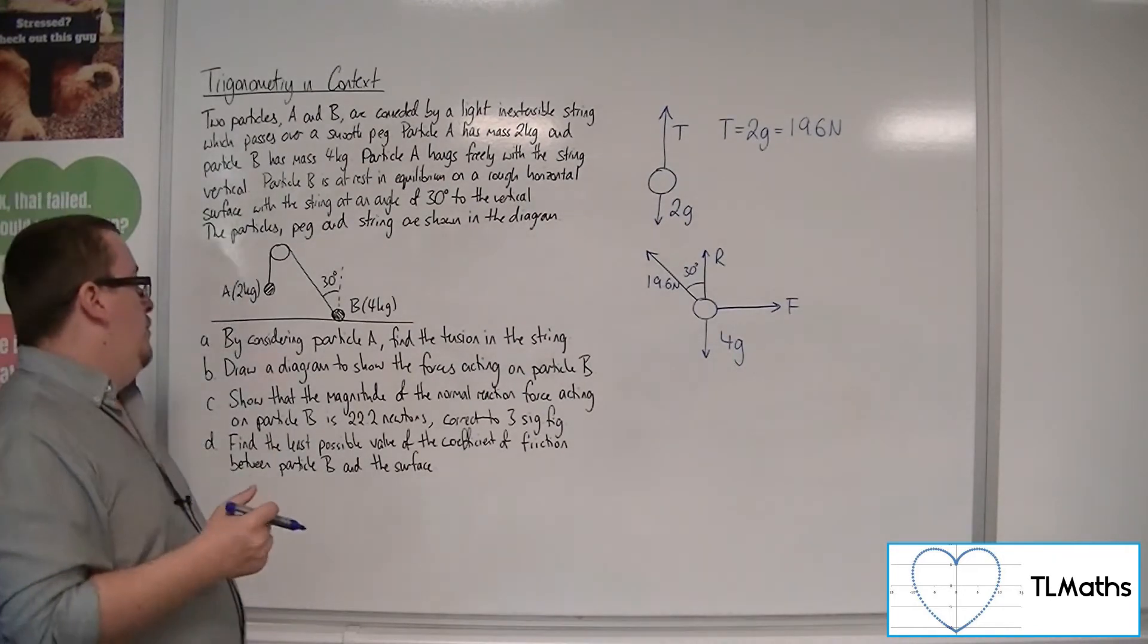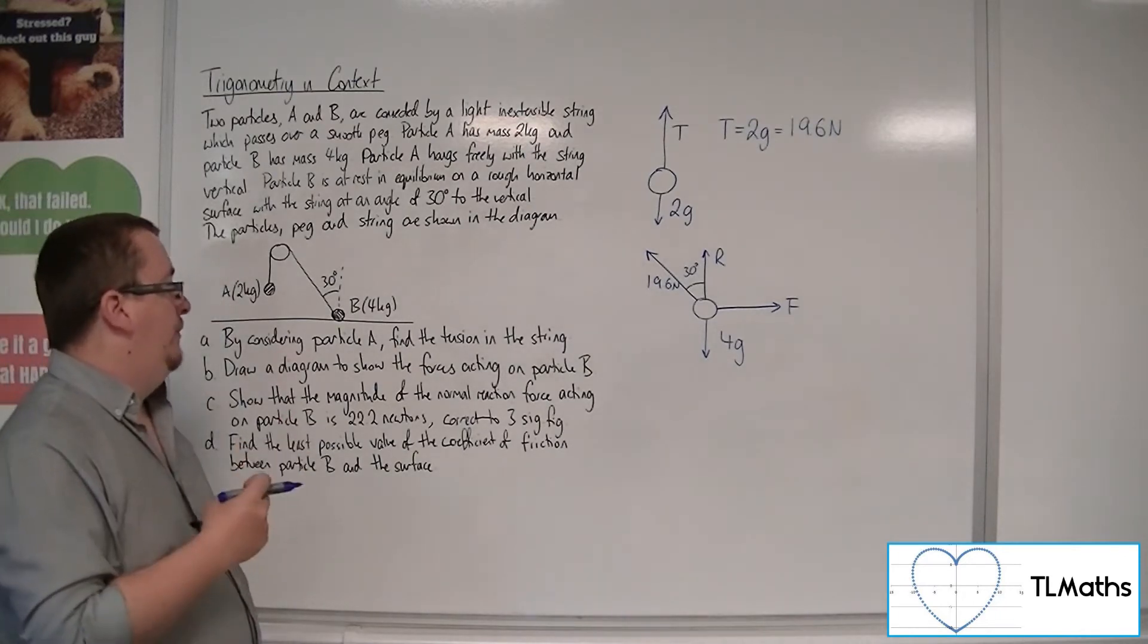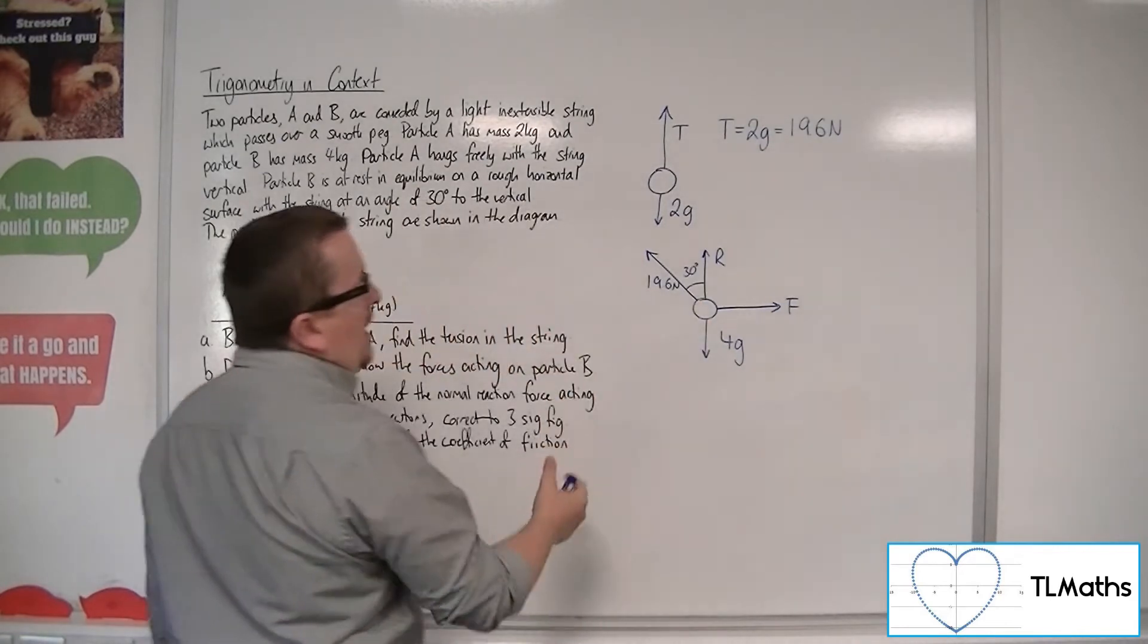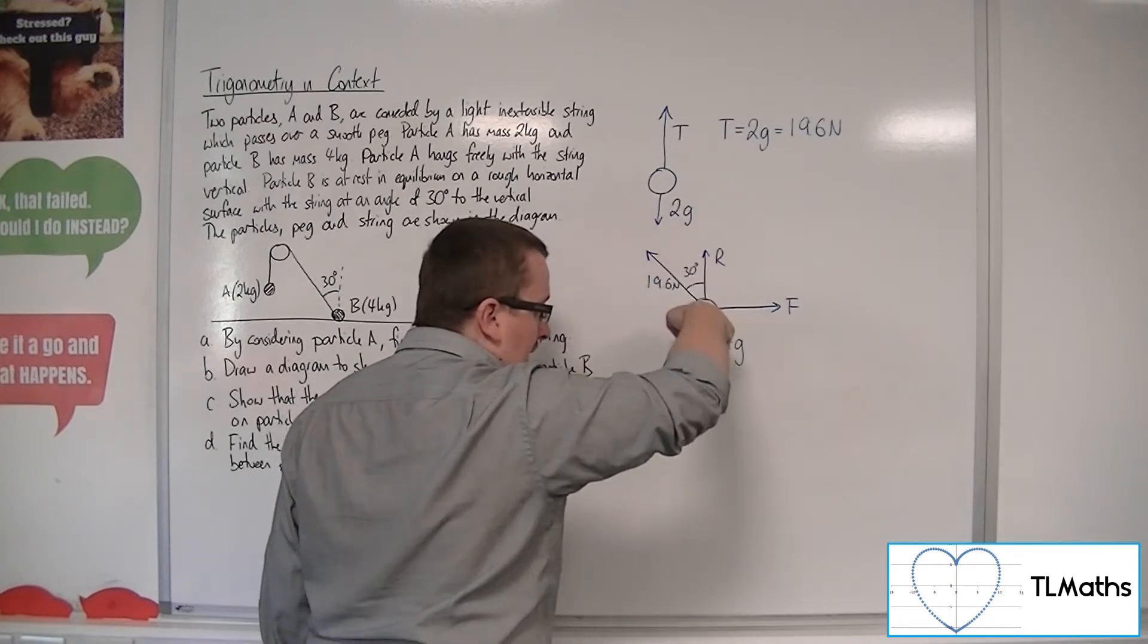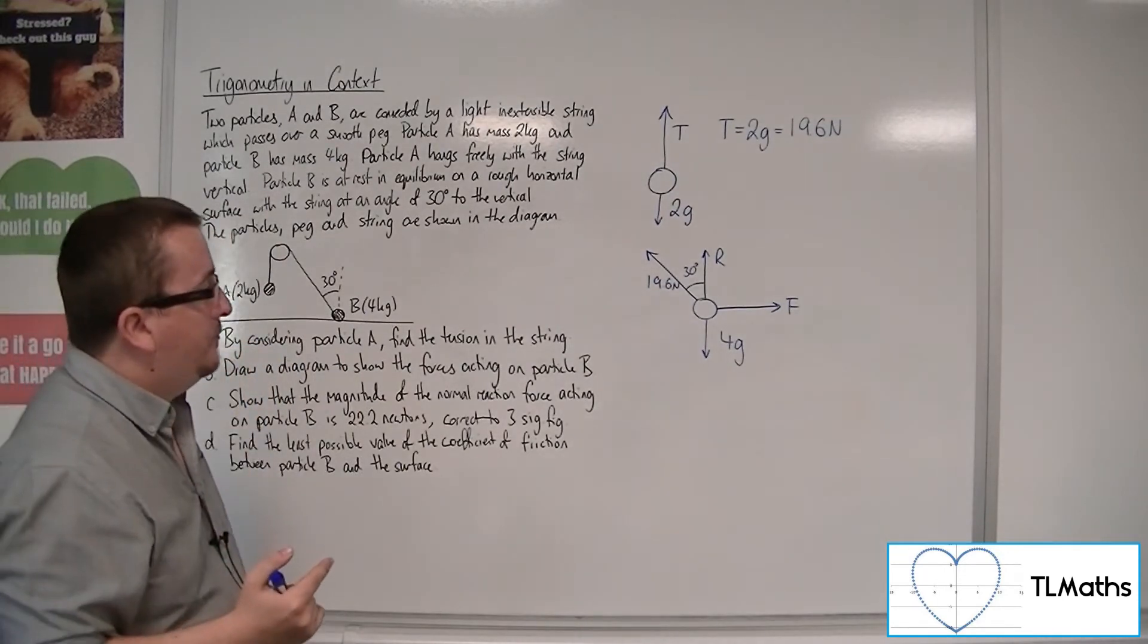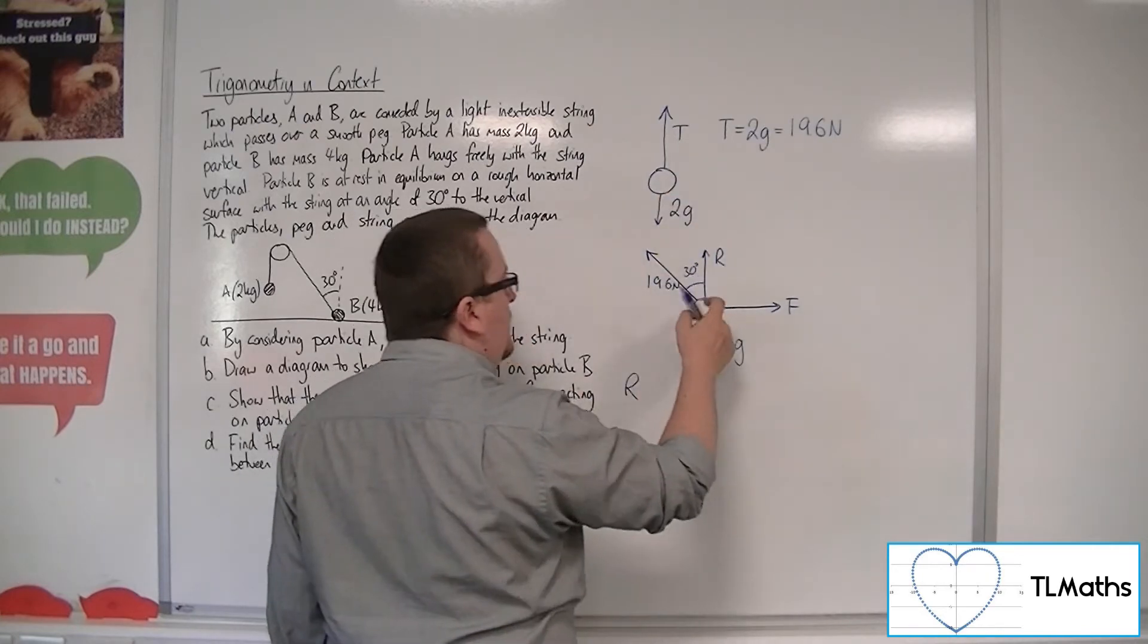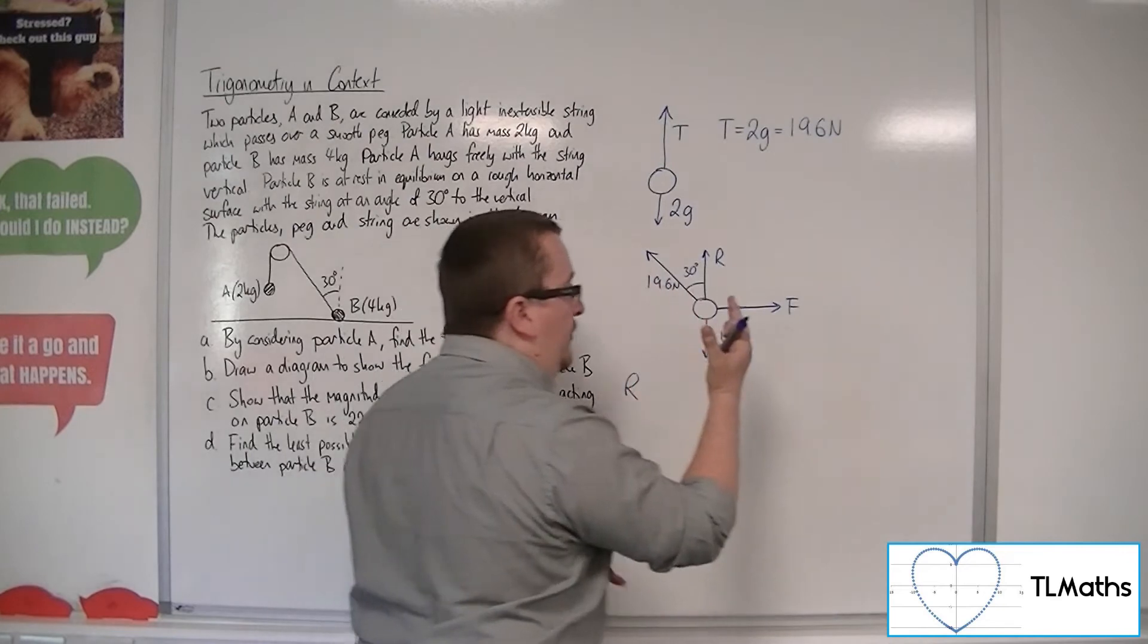Part C, show that the magnitude of the normal reaction force acting on particle B is 22.2 newtons, correct to three significant figures. Now because, once again, this particle B is in equilibrium, that means that the forces that are working in that direction and that direction, so vertically up and vertically down, must be the same. So what do we have? Well, we've got R working upwards, plus we've got that part of the string, the tension in the string, that is working vertically upwards as well.